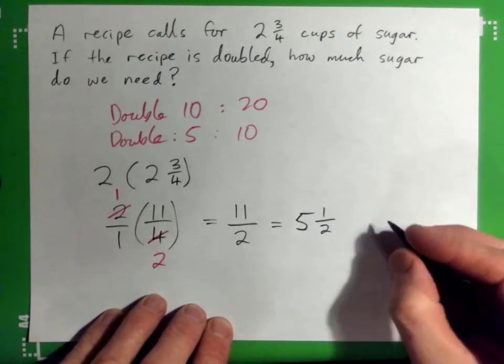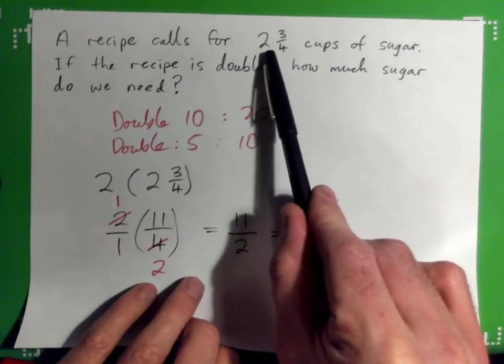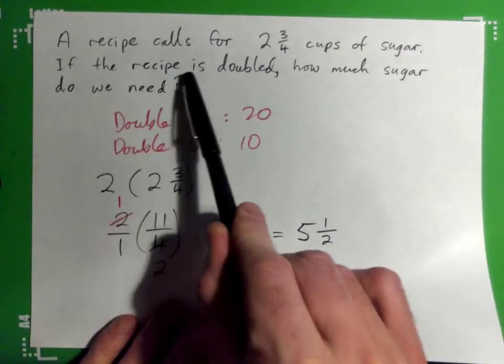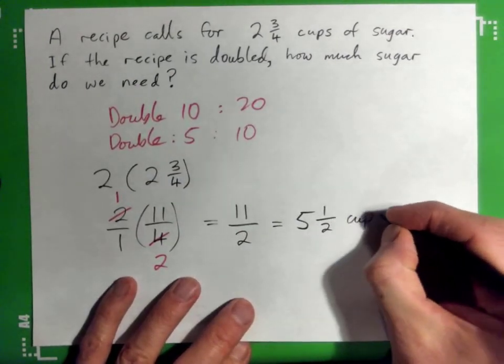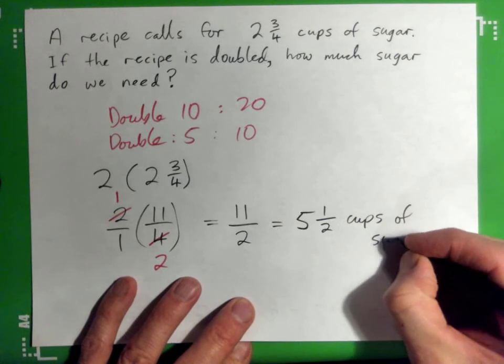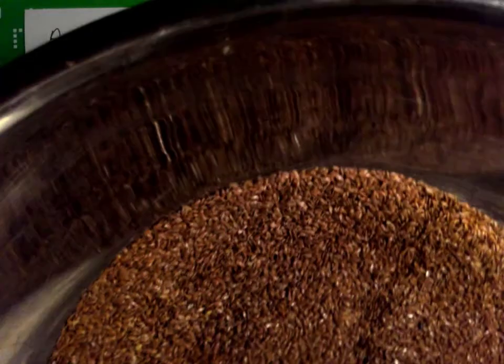And the answer: the question was the recipe calls for two and three quarter cups of sugar, if the recipe is doubled, how much sugar do we need? Five and a half cups of sugar, and that's what we actually have here. That's five and a half cups right there, five and a half cups, yep.